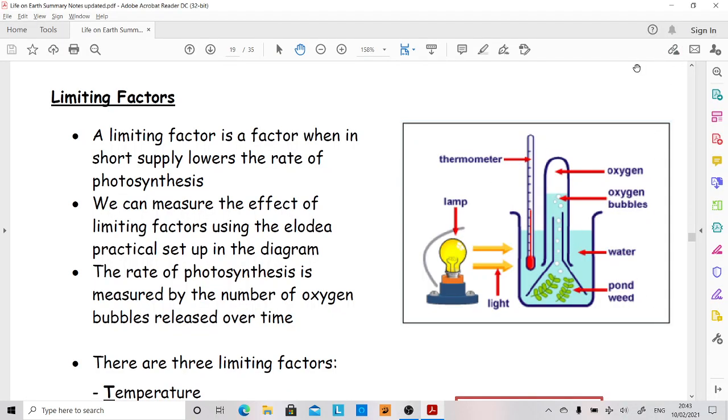This is Key Area 3.3 of National 5 Biology photosynthesis, looking at limiting factors. Limiting factors are items which if they're in short supply, the rate of photosynthesis will be lower.